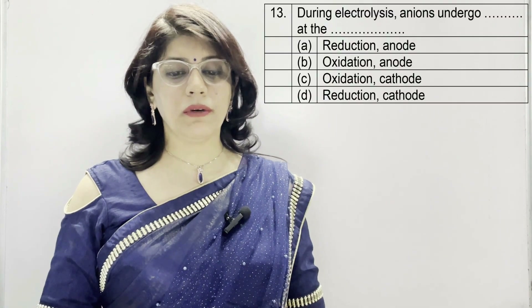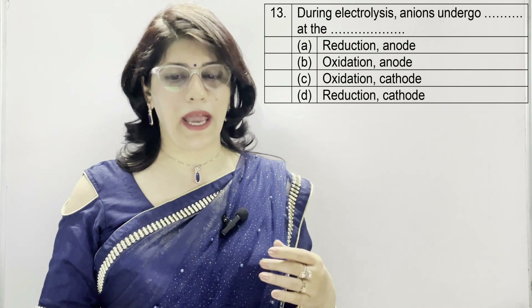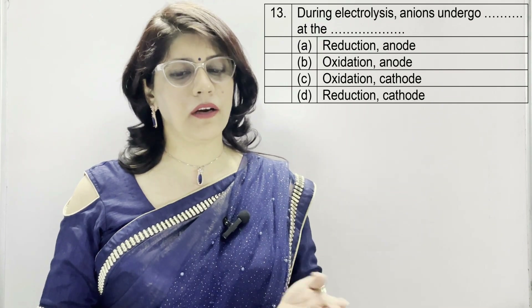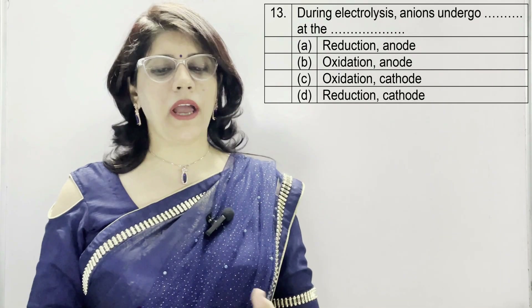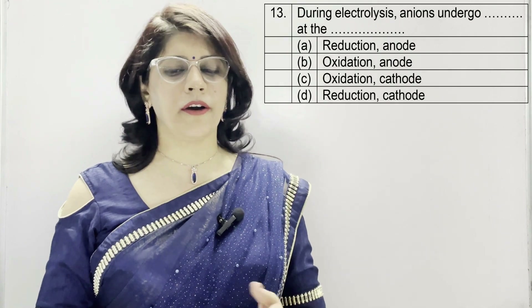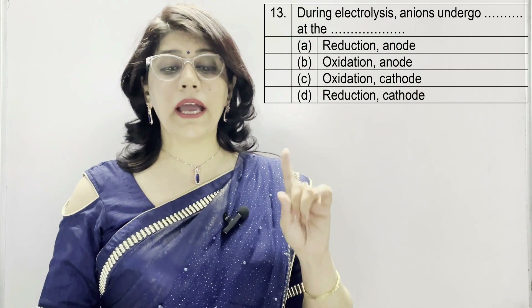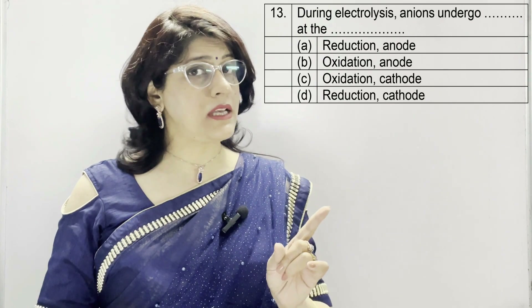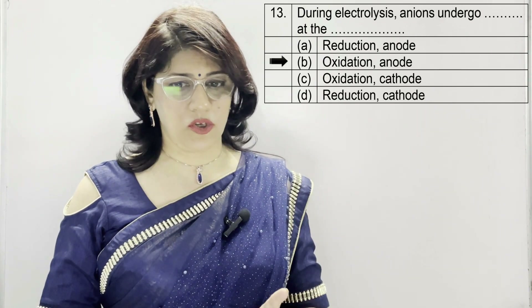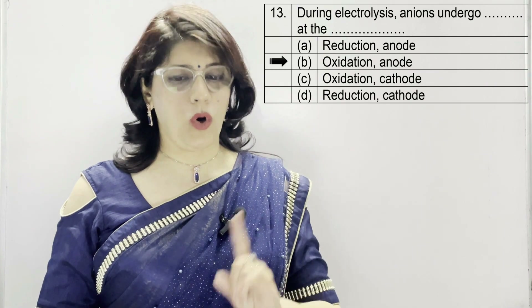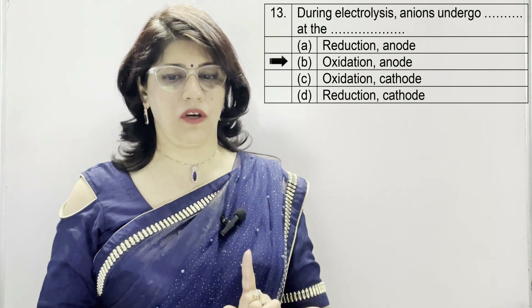In question number 13: during electrolysis, anions undergo dash at the dash. Options: A: reduction at anode, B: oxidation at anode, C: oxidation at cathode, D: reduction at cathode. The correct option is B — anions undergo oxidation at the anode, which is the positive terminal.